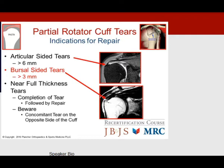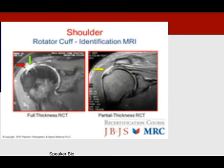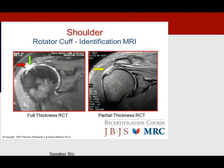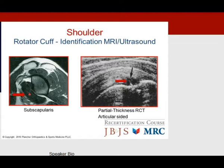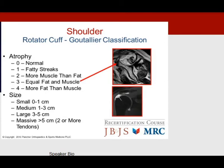MRI can identify full-thickness and partial-thickness rotator cuff tears. On recertification exams, study the sagittal view for the subscapularis and become facile with ultrasound to detect partial tears. Understanding fat atrophy via the Goutallier classification is critical for predicting outcomes — the more fat relative to muscle, the more cautious you should be, as re-tears are more likely.